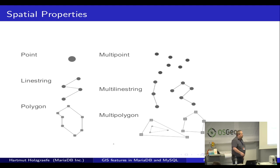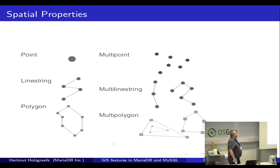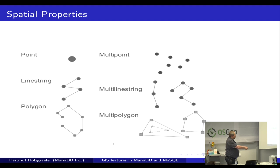Visually, on the left side we have simple types like points, line strings, and polygons. On the right side we have the collections: multipoint sets, multi-line strings, multi-polygon. Here is a simple polygon on the right side, and on the left side, a polygon with an interior ring — so the actual polygon is only the ring itself.